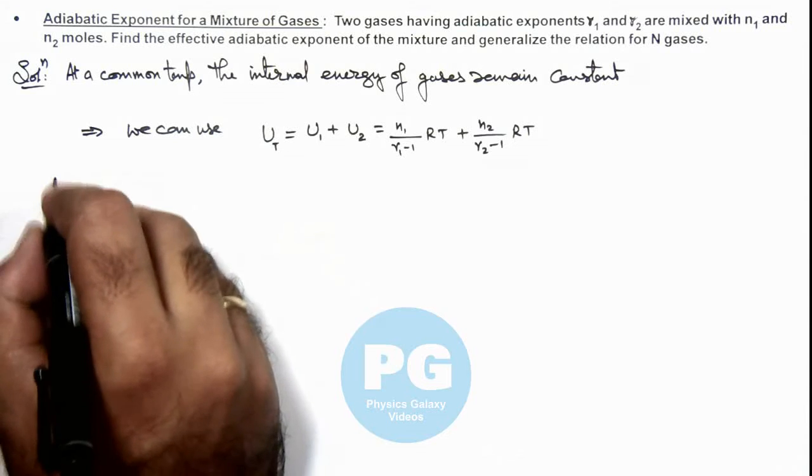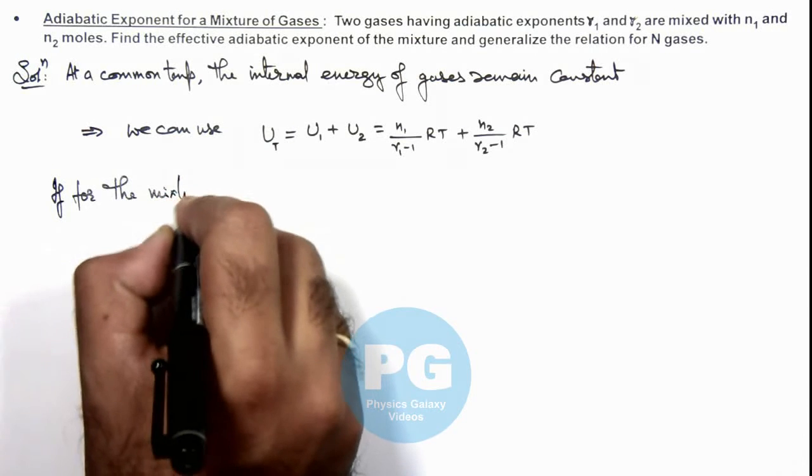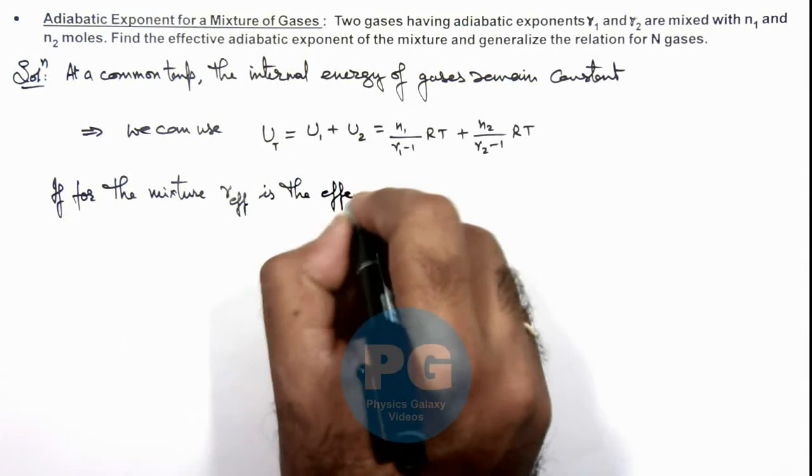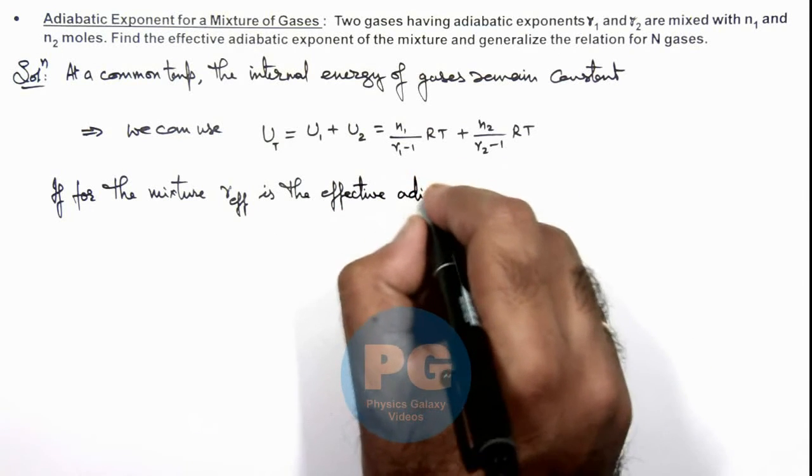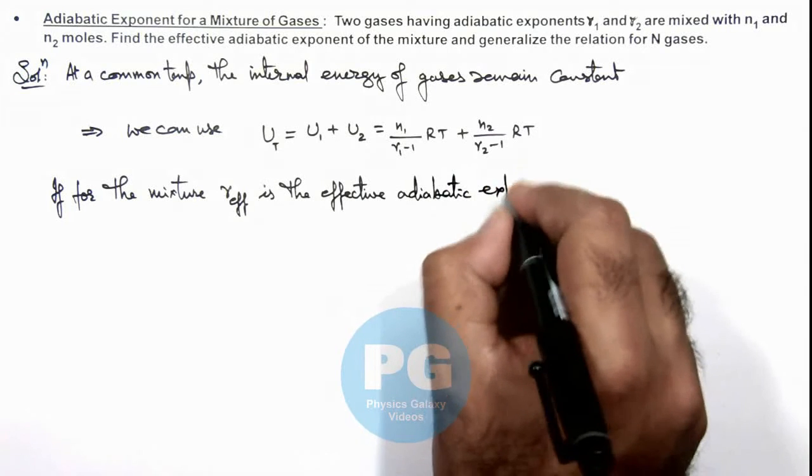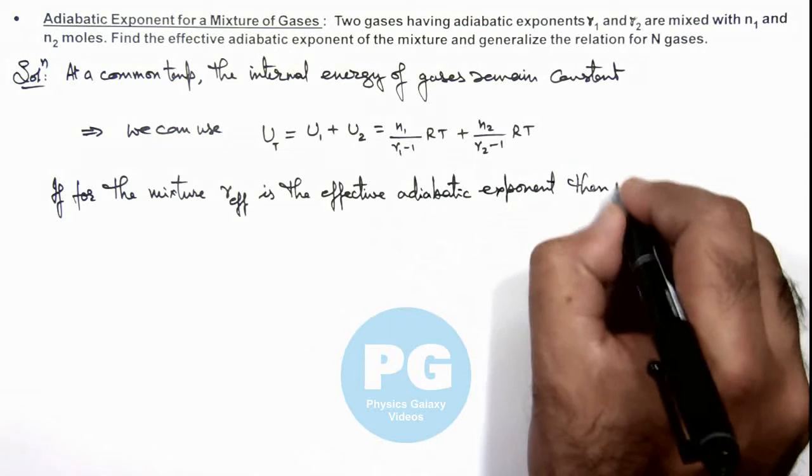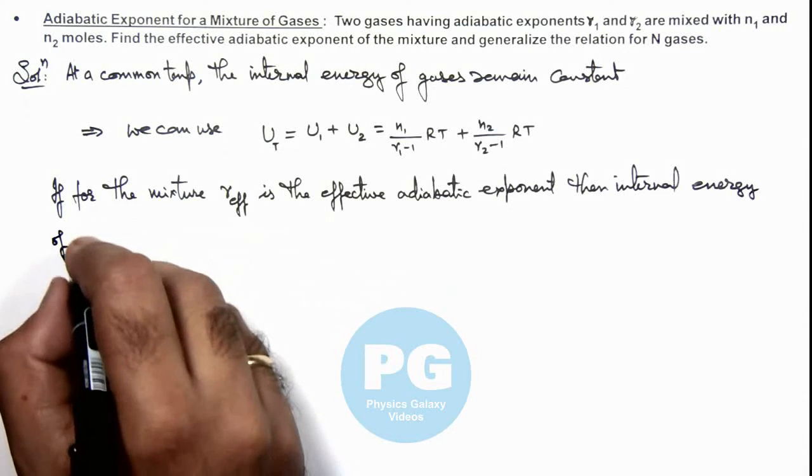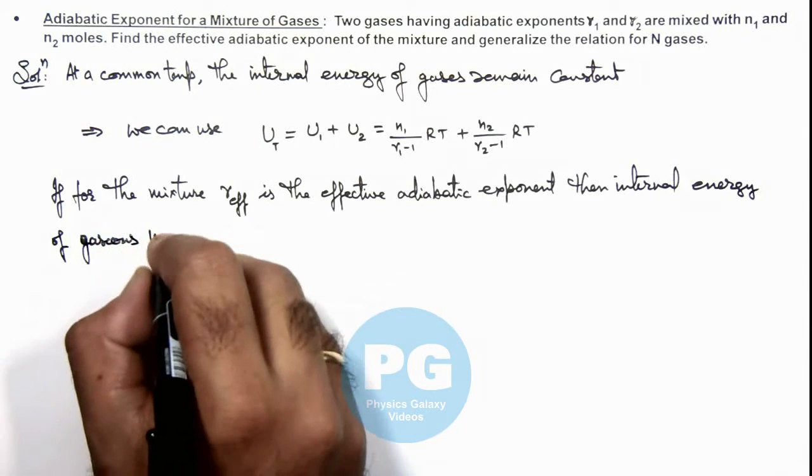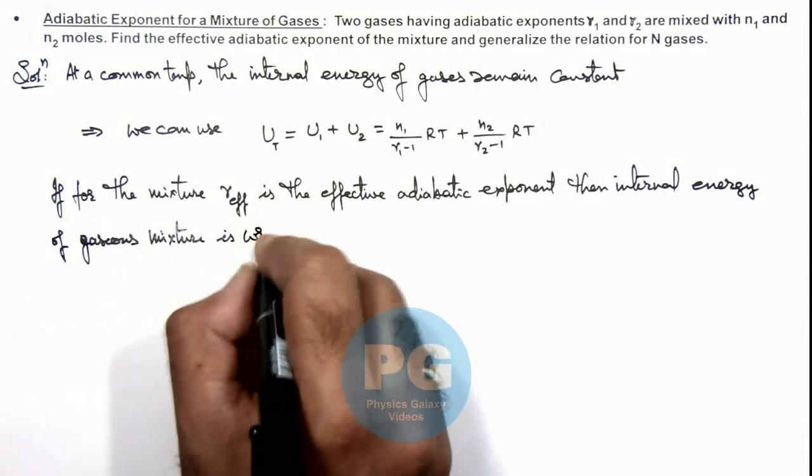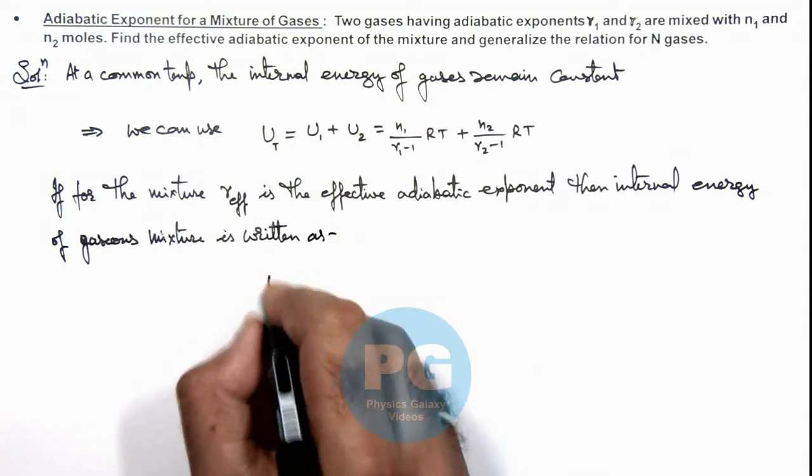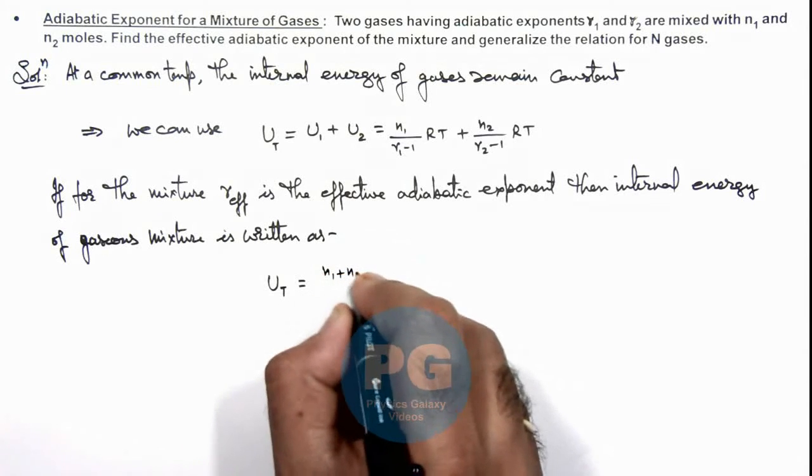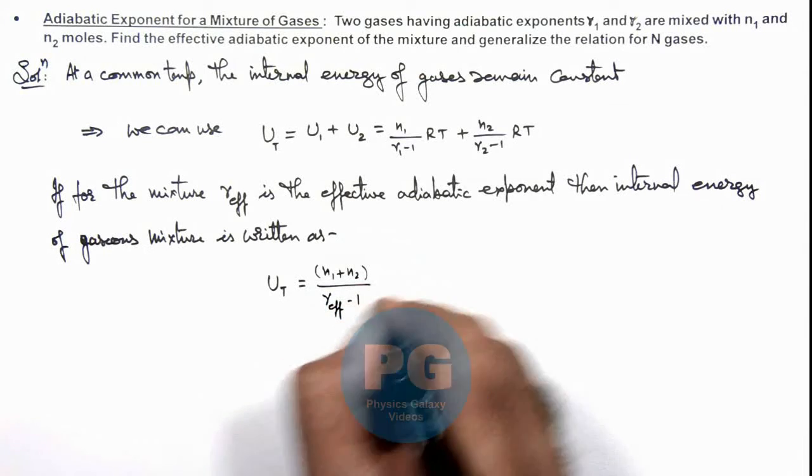Now we can write, if for the mixture gamma effective is the adiabatic exponent, then internal energy of the gaseous mixture is written as: the total internal energy equals, for the mixture, total number of moles are n1 plus n2, so we can write (n1 plus n2) by (gamma effective minus 1) multiplied by R T.